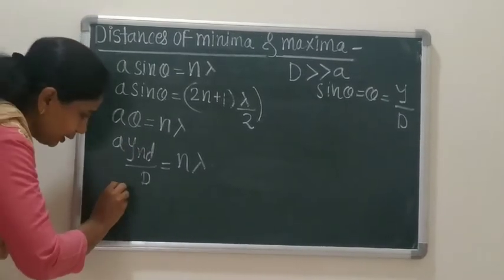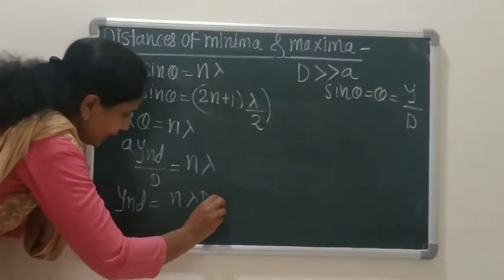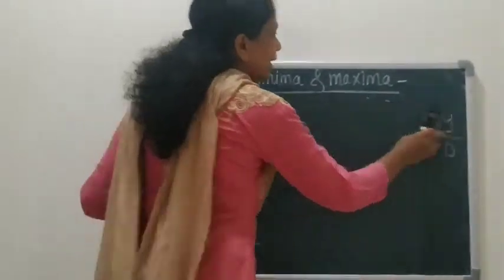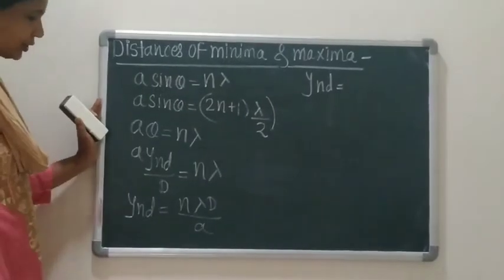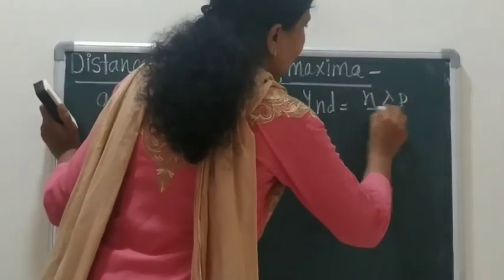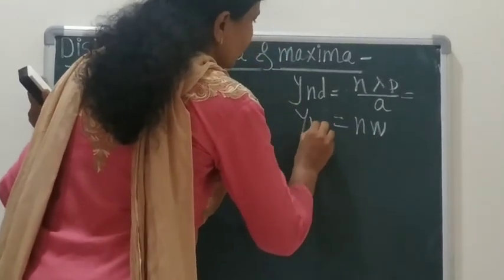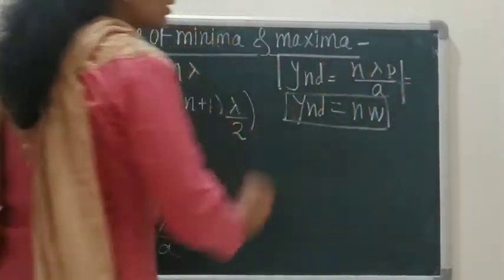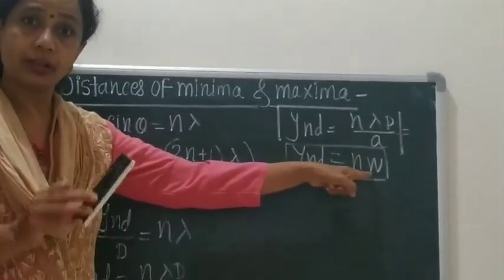From this equation, the value of y_nd — the distance of the dark fringe from the central bright fringe — is equal to nλD/a, which equals n·W. Therefore y_nd = nW, where W is the fringe width or bandwidth for the dark band, equal to λD/a.